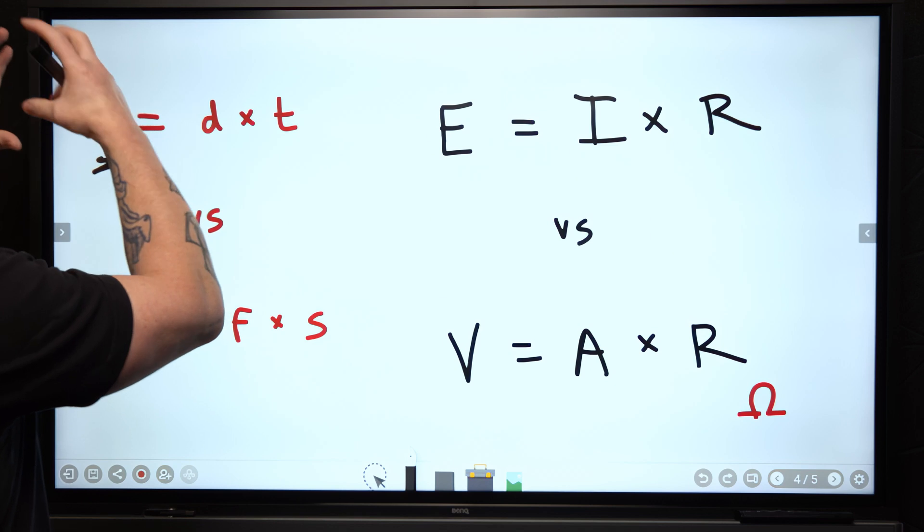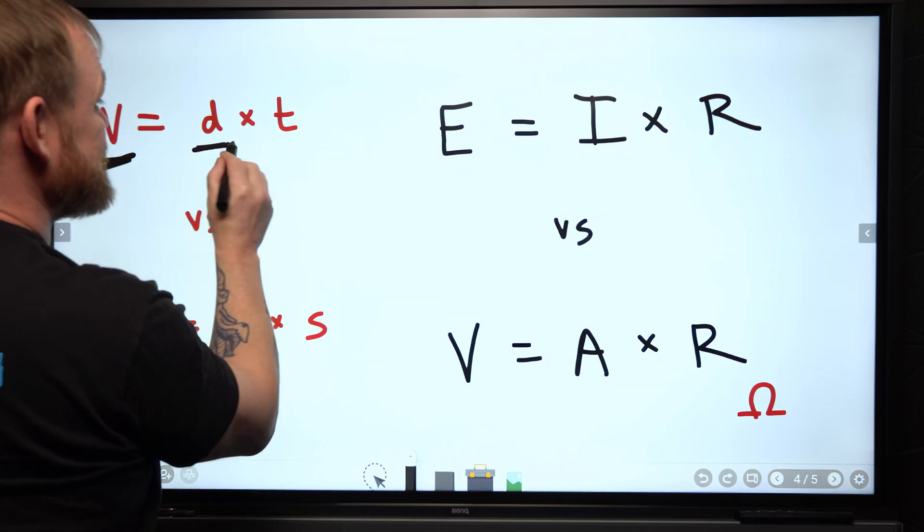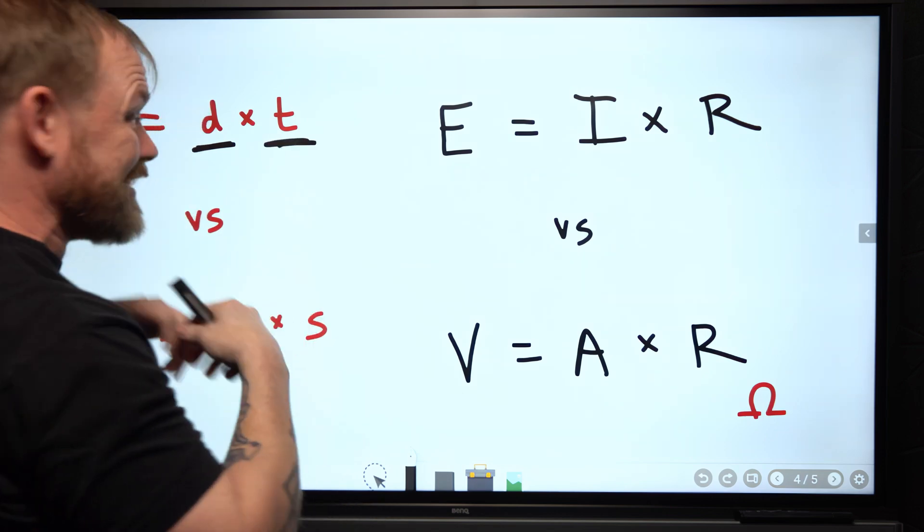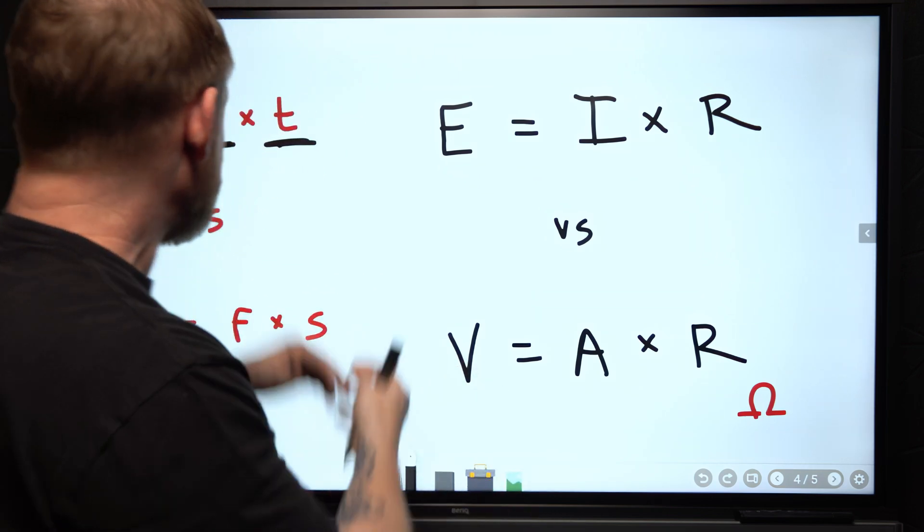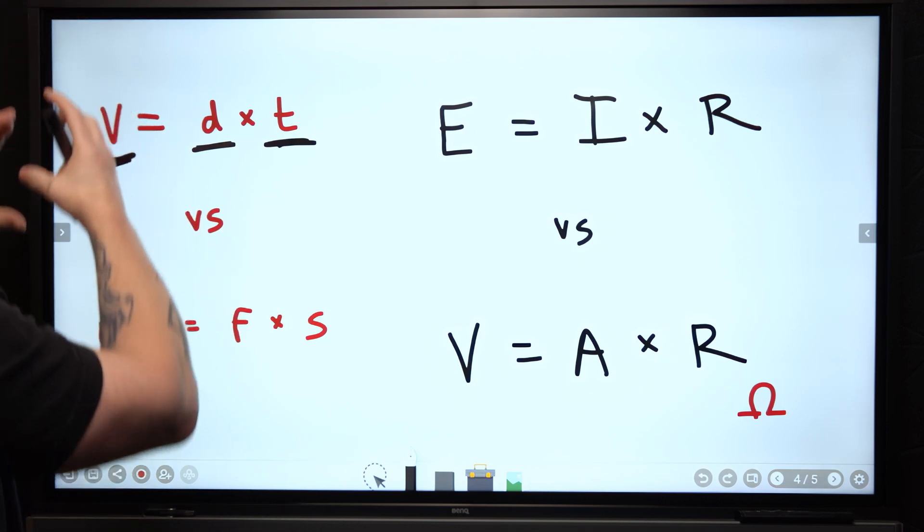No, we say what is the velocity? What's the speed? And that speed should be whatever the distance that's being traveled times the time that it takes to travel. That's going to give us a certain velocity. And that velocity is measured in miles per hour.